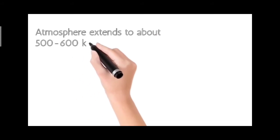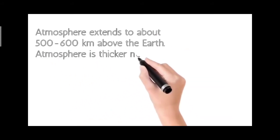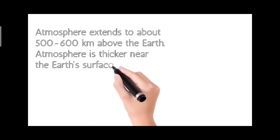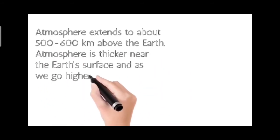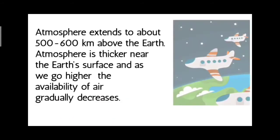Atmosphere extends to about 500 to 600 kilometers above the earth. Atmosphere is thicker near the earth's surface and as we go higher, the availability of air gradually decreases.